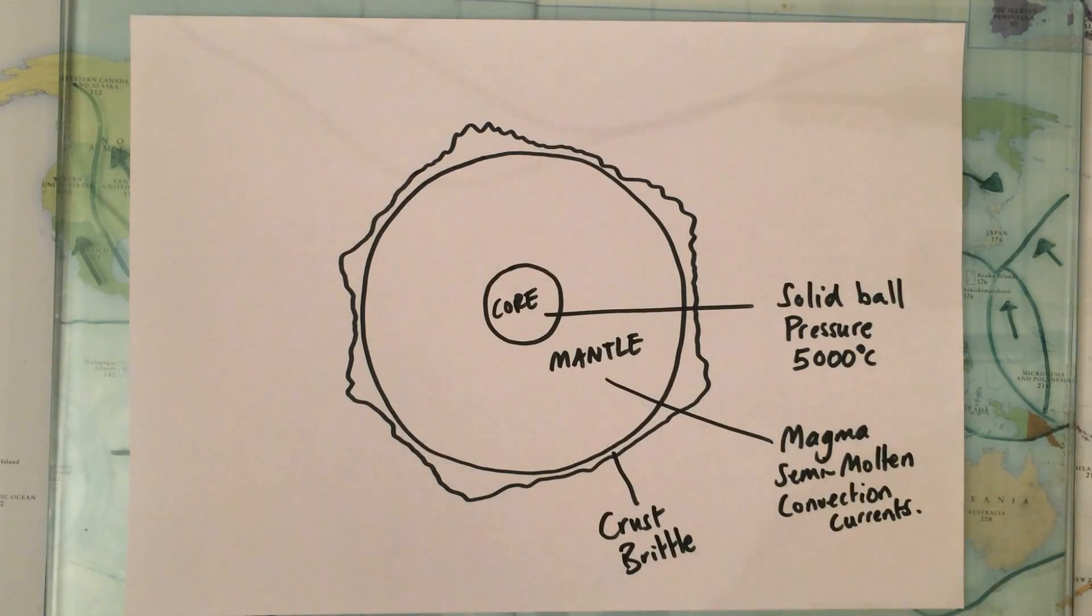The eggshell is very brittle and proportionally an eggshell on the egg is about the same proportion as the earth's crust on the earth.